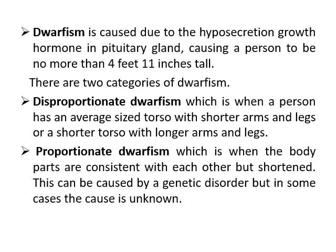Now let us move on to dwarfism. Dwarfism is the exact opposite of gigantism — it results in a short stature person. Their height rarely crosses 4 feet 11 inches or 5 feet. It is caused due to the hyposecretion of growth hormone. Whenever there is less secretion of growth hormone during childhood, it results in stunted growth of the body and the person becomes short statured, resulting in a dwarf condition.